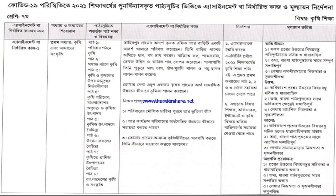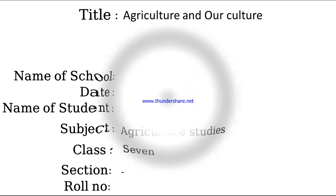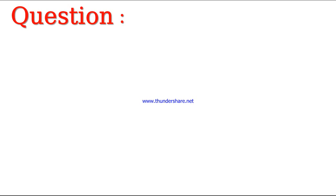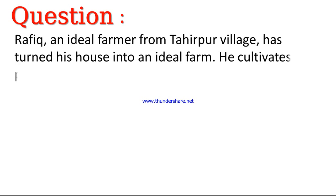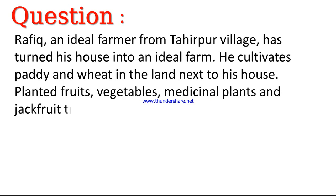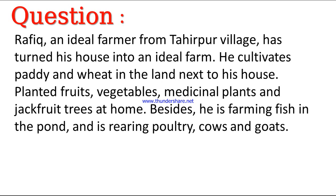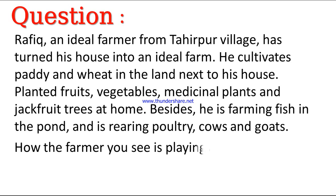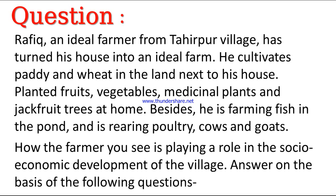Take a look at the given instructions of the assignment. The article title is 'Agriculture and Our Culture', subject: agriculture studies, class 7. The question: Rofik, an ideal farmer from Tahirpur village, has turned his house into an ideal farm. He cultivates paddy and wheat in the land next to his house, planted fruits, vegetables, medicinal plants and jackfruit trees at home. Besides, he is farming fish in the pond and is rearing poultry, cows and goats. How the farmer you see is playing a role in the socio-economic development of the village — answer on the basis of the following questions.